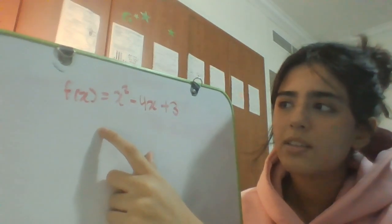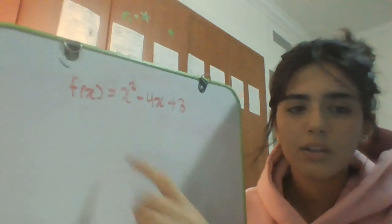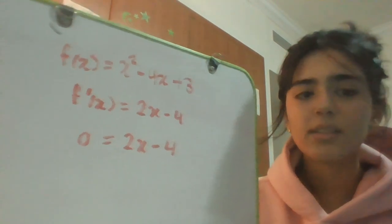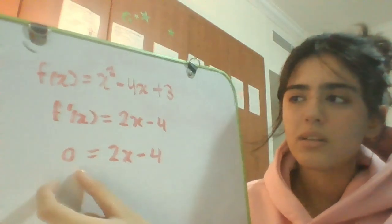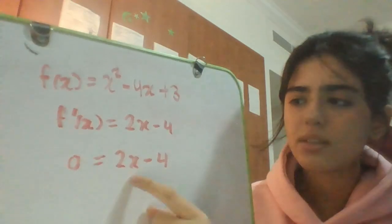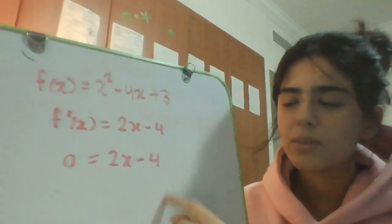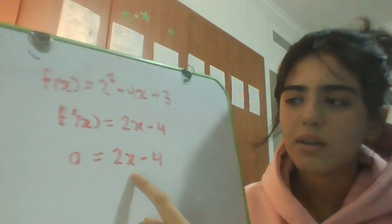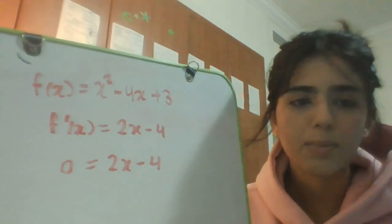I've made the derivative equal to zero. When you do that, you're going to isolate for x. Move the 4 to the other side and divide by 2, and the critical number is going to be just positive 2. This is simple algebra.